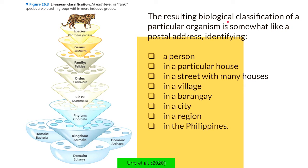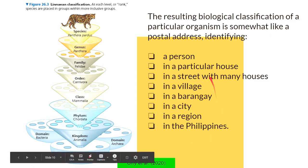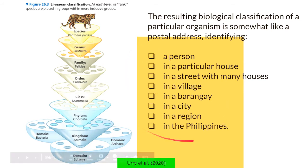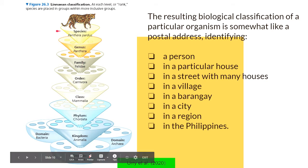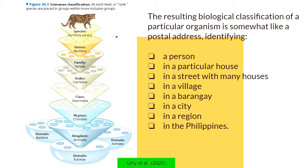The resulting biological classification of a particular organism is somewhat similar to a postal address, in which you need all the following information to send a letter or a package to a person. We can compare this information to the different taxonomic ranks in the Linnaean classification. For example, you want to send a letter to a person — in our comparison, that would be the species Panthera pardus, the scientific name of a leopard.